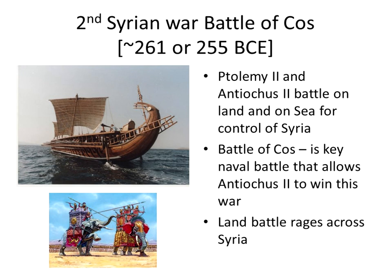Now let's talk about the sea battles. The second Syrian War's battle of Kos was about 261 or 255 BCE. Ptolemy and Antiochus battled on land and sea for control of Syria. The battle of Kos is a naval battle that allows Antiochus to win the war. At the same time, land battles raged on in Syria, some of which may have been fought with elephants.